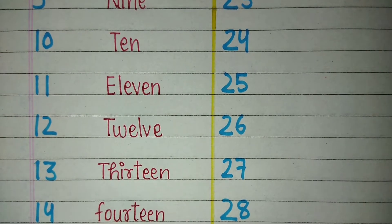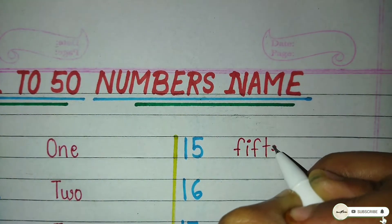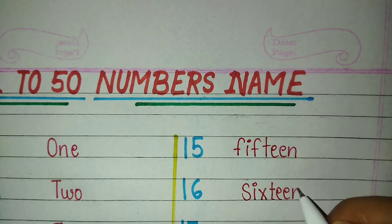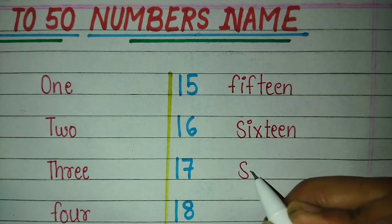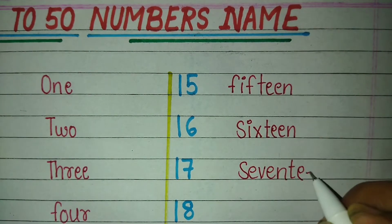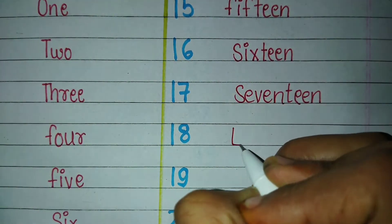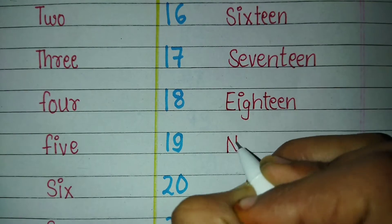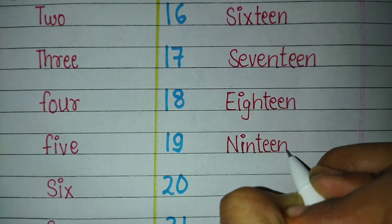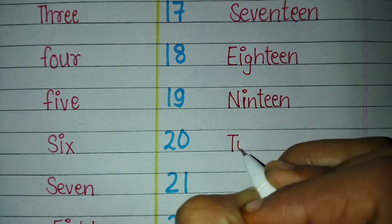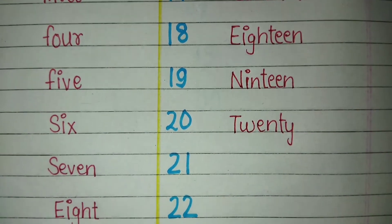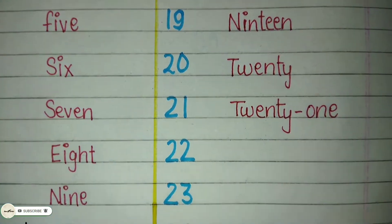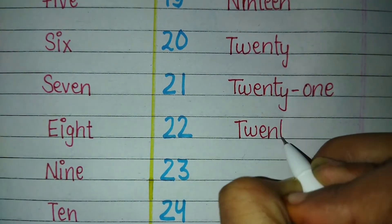Fourteen — 14. Fifteen — 15. Sixteen — 16. Seventeen — 17. Eighteen — E-I-G-H-T-E-E-N — 18. Nineteen — 19. Twenty — T-W-E-N-T-Y — 20.